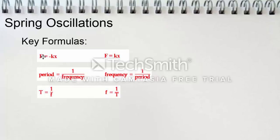Here we have just a few key formulas. Force equals the negative value of the spring constant multiplied by the displacement when the force is being exerted by the spring. Force equals the positive value of the spring constant multiplied by the displacement when the force is being exerted on the spring. To find period, T equals 1 over f. And to find the frequency, f equals 1 over T.